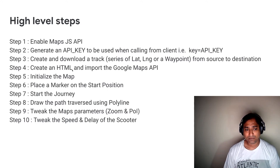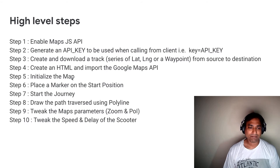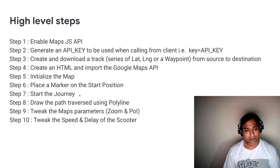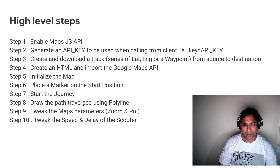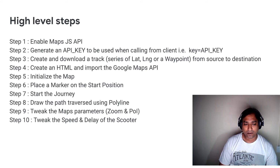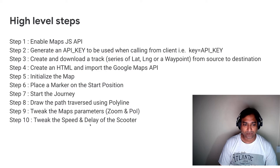We will create an HTML file and import the Maps API, then we will do the code. We will initialize the map with certain parameters and place a marker on the start position on the map we have chosen. We will also change the icon image so that it reflects the scooter. Then we will start the journey. As the vehicle moves forward, we will also draw a polyline for the path it has already traversed. We will optionally tweak some map parameters, for example a higher zoom level and removing or including points of interest like banks, hospitals, or petrol pumps. We will finally tweak the speed and delay of the scooter to control how fast or slow the vehicle moves.